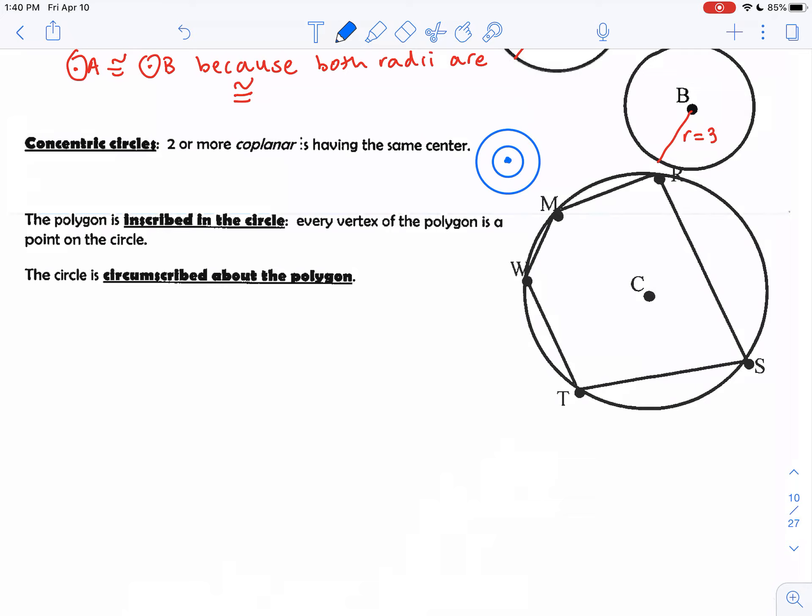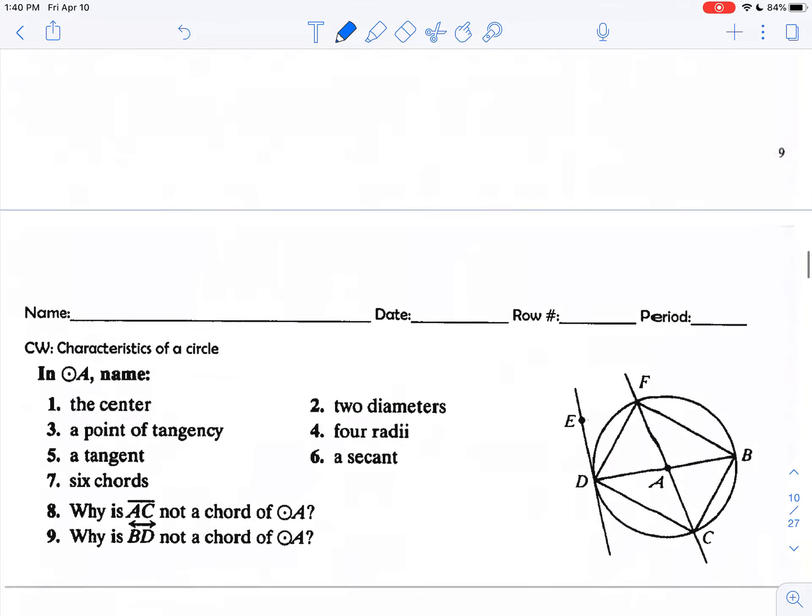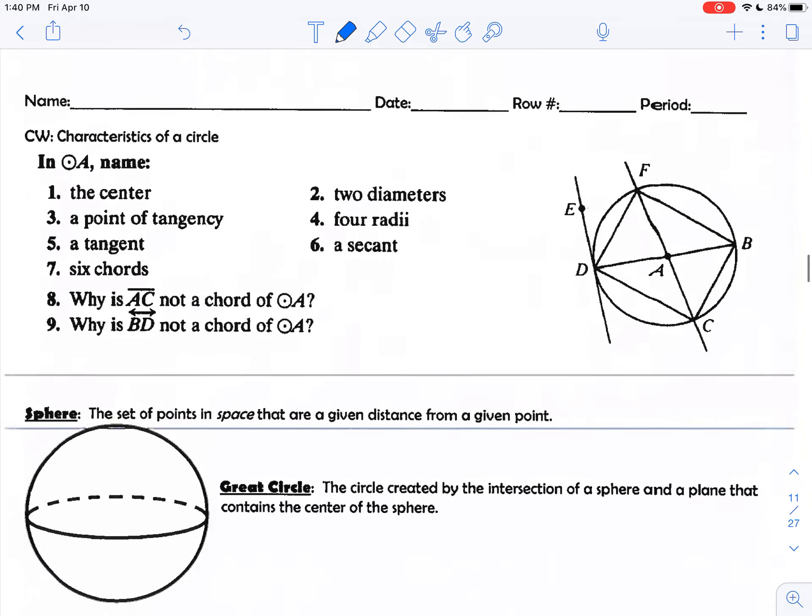We've talked about inscribed in the circle versus circumscribed about the polygon. Inscribed has the word 'in' in it at the beginning. So when we say the first figure, the polygon is inscribed in the circle, it means that the polygon is inside the circle, as opposed to circumscribed about the polygon. So the circle is outside the polygon. Circumscribed means it's outside, and we can use the word 'in' and the word 'about' to help us situate which one is inside and outside.